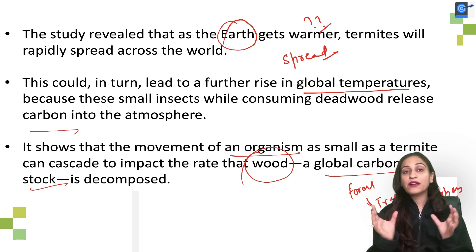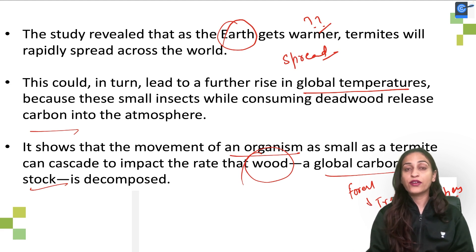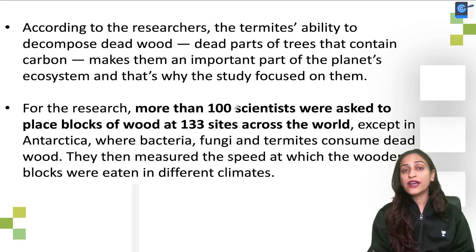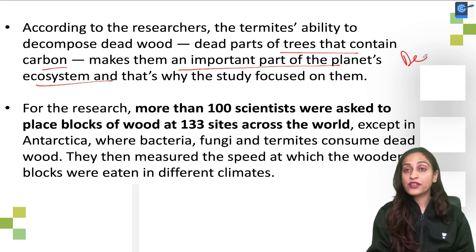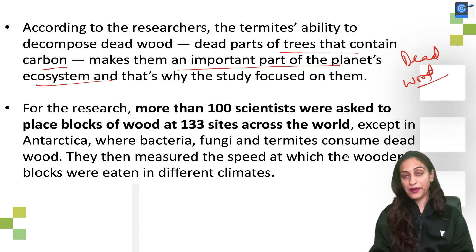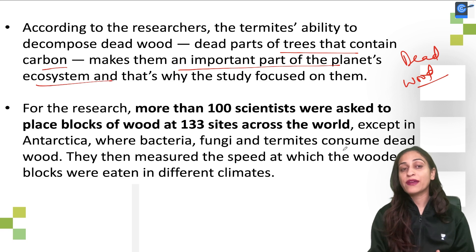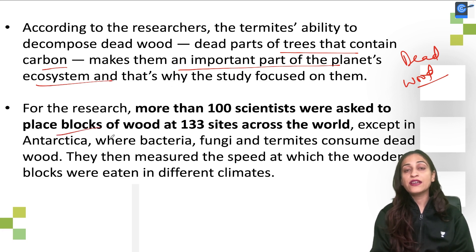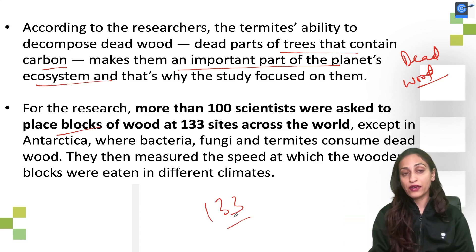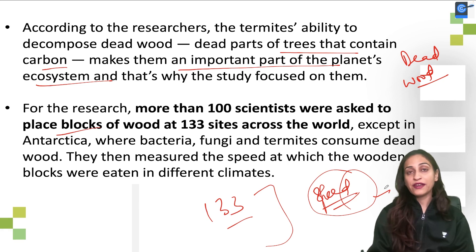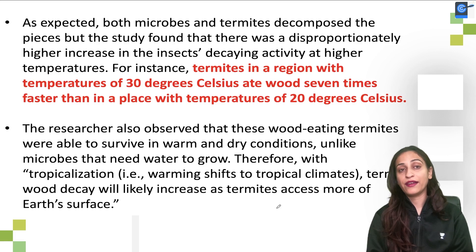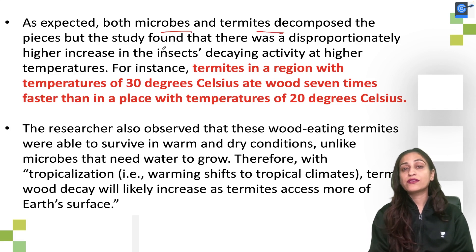Wood, meaning forests and trees, is a carbon sink — it stores carbon. When dead wood decomposes, carbon is released. The dead parts of trees that contain carbon make them an important part of the planet's ecosystem. This research involved hundreds of scientists who placed wood blocks at 133 different places in the world, leaving out Antarctica, and measured decomposition speed across different climates. As expected, where temperature was higher, microbe and termite decomposition was faster.